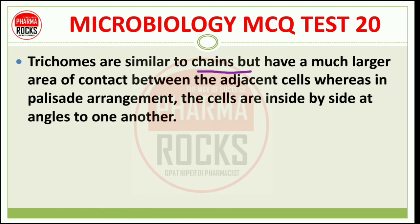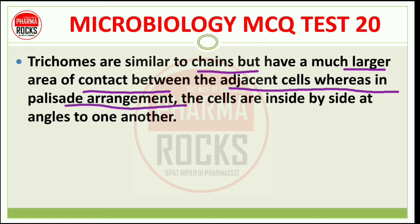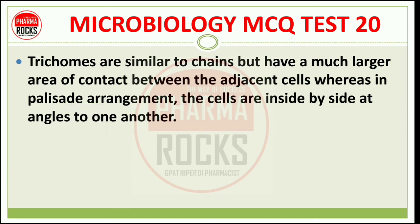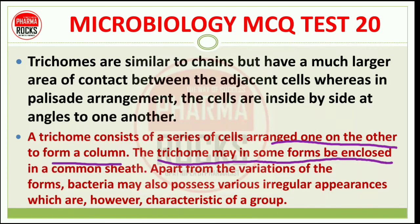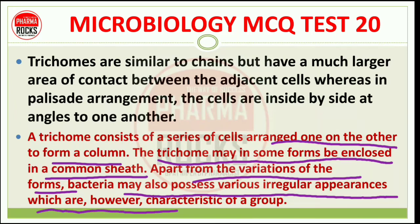Trichomes are similar to chains but have a much larger area of contact between adjacent cells. In palisade arrangement, the cells lie side by side at an angle to one another. A trichome consists of a series of cells arranged one on the other to form a column. Some trichomes are enclosed in a common sheath. Bacteria also possess various irregular appearances which are characteristic of their group.